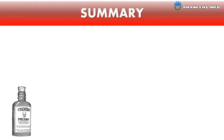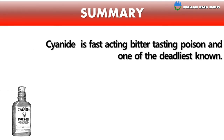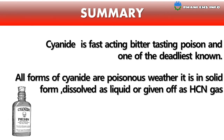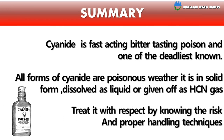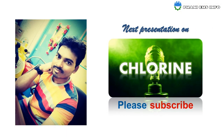To summarize: cyanide is a fast-acting, bitter-tasting poison and one of the deadliest known. All forms of cyanide are poisonous, whether in solid form, dissolved as liquid, or given off as hydrogen cyanide gas. Treat it with respect by knowing the risks and proper handling techniques. Watch the next presentation on chlorine — keep watching, don't forget to subscribe, and have a safe day.